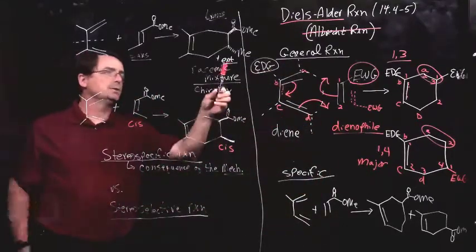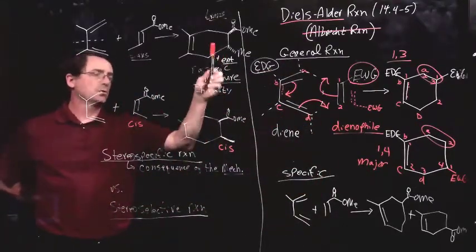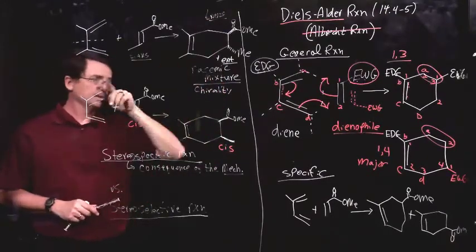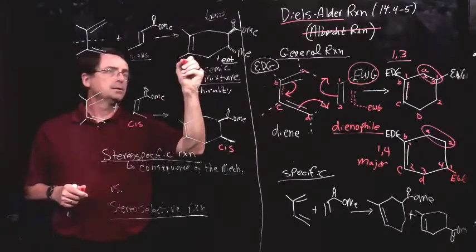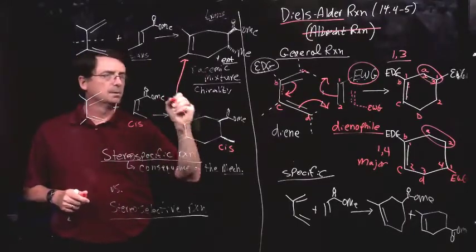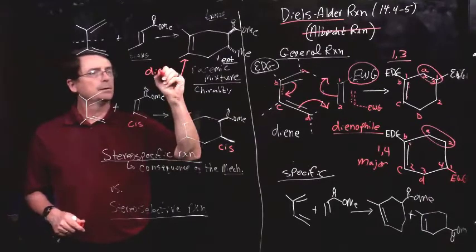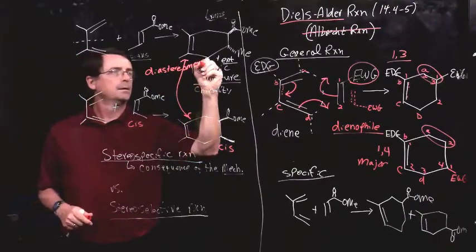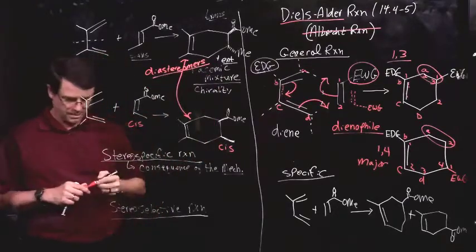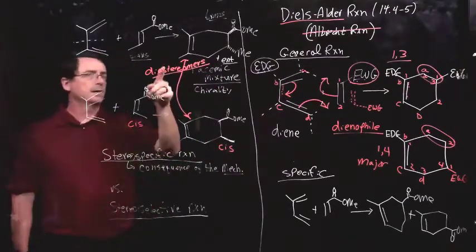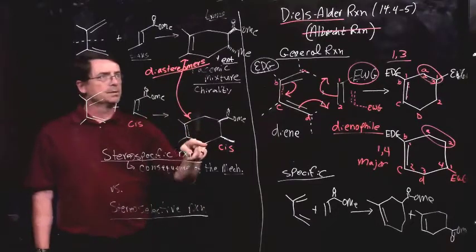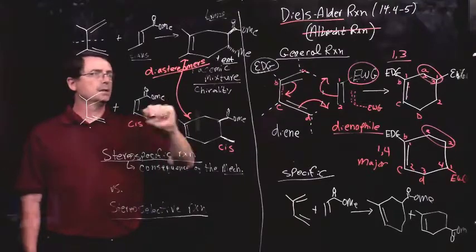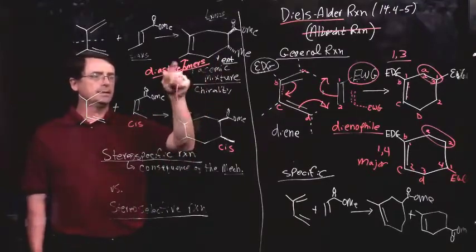What's the stereochemical relationship between the trans and the cis products? I talked about the enantiomers here. Those are enantiomers, but the relationship between these two, they're diastereomers. So if you don't recall that diastereomers are stereoisomers that are not mirror images of one another. So review those concepts in enantiomers, chirality, diastereomers.